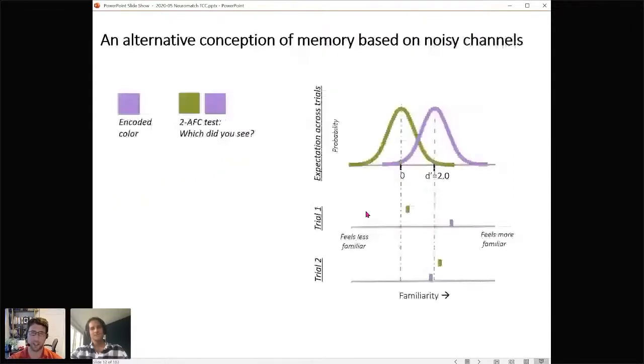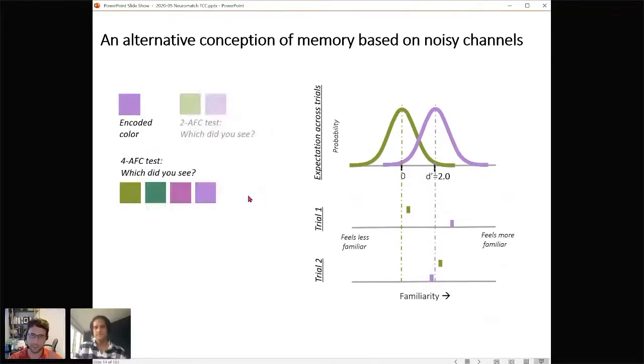First let's think about signal detection theory as applied to a simple memory situation. Imagine you saw this purple color and then afterwards you were asked which of these two things did you see, purple or green. The way signal detection theory conceptualizes this is that this green one that you never saw nonetheless evokes some familiarity in your mind. On some trials it might feel not that familiar, but on some trials green might feel very familiar. This purple color because you did see it, the memory signal is that your familiarity, your memory match signal for that, got boosted. So you got a two standard deviation boost, so your d prime is two. So that means on average purple feels more familiar than green and on many trials it will, but sometimes it won't. That's the noise.